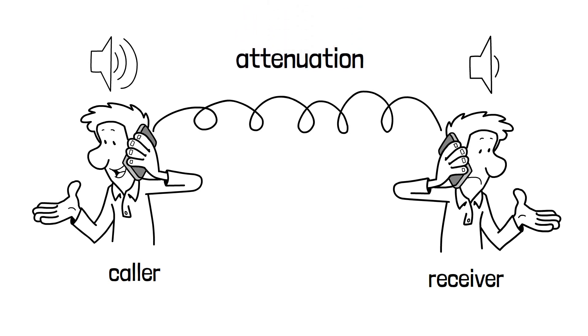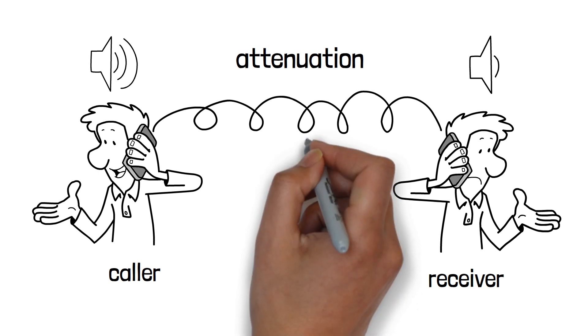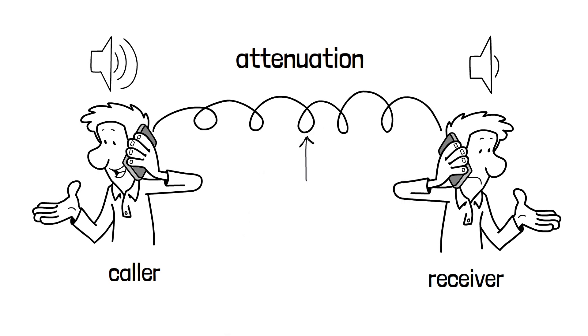The reason is attenuation and it is caused due to the imperfection of the transmission medium. In this case, wire is the transmission medium.